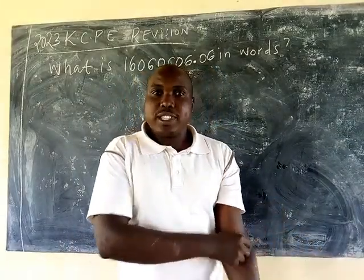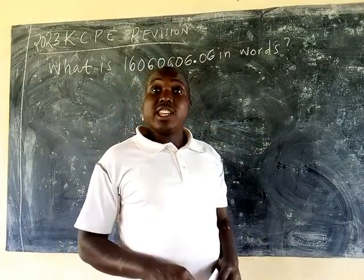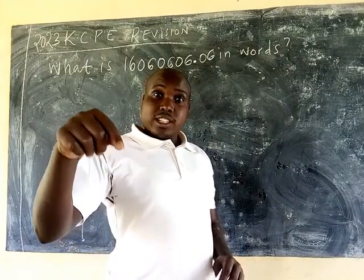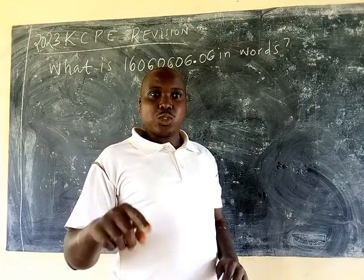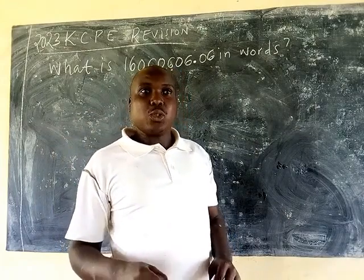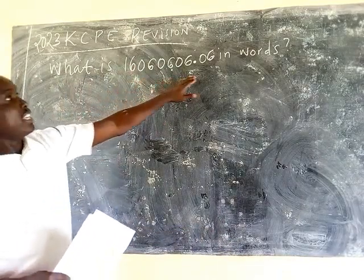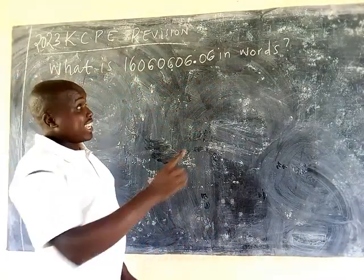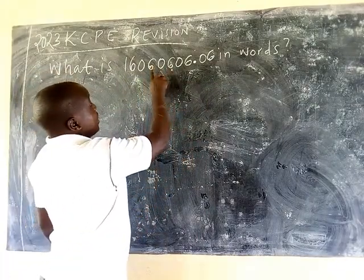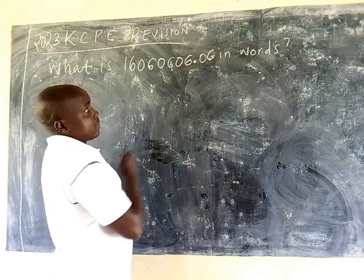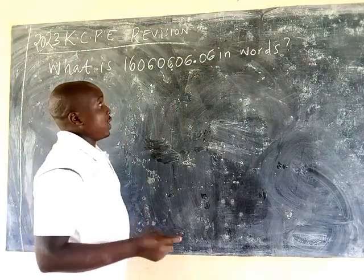Welcome. Today I want to continue with a series we are doing for KCPE. If you have not seen the videos of series one and series two, there are links in the description — click that link to see what we have done in the previous videos. So I have a number here. What is this number? If you want to write a number in words that has a decimal point, from here to here is the normal number, and then there is a decimal place.